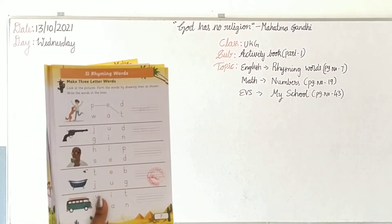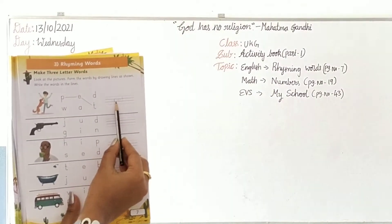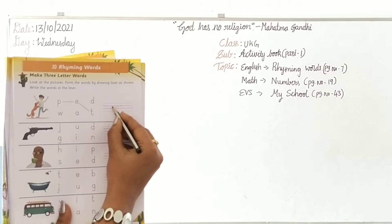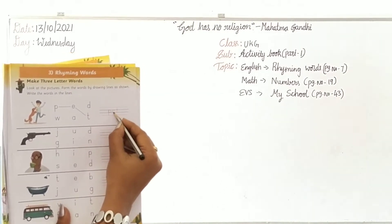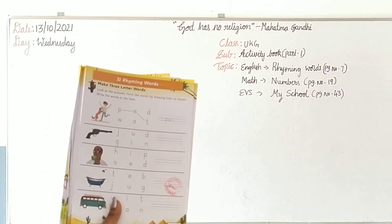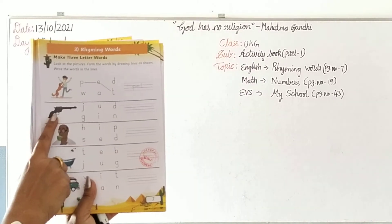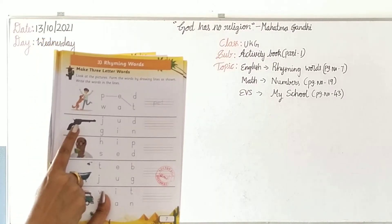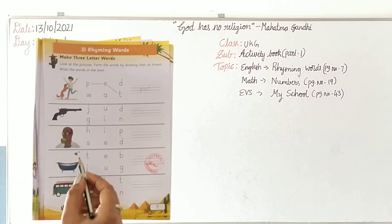P-E-T, pet. You have to write the letters in the given line. See, trace P-E-T. Next, which picture is it? Gun. First you have to draw the lines.